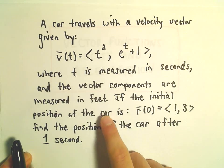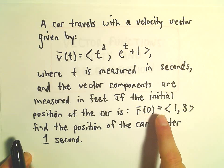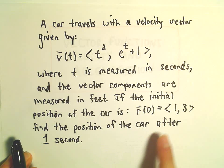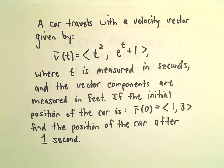If we know the initial position of the car is r(0) = <1, 3>, we want to find the position of the car one second later.